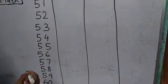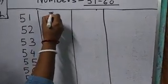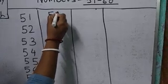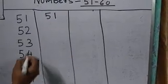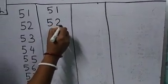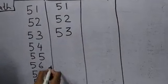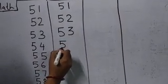Now I will show you how to write this number. Clear? So let's start. 5, 1, 51. 5, 2, 52. 5, 3, 53. 5, 4, 54.